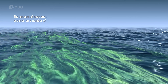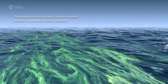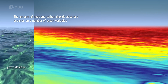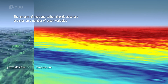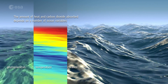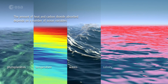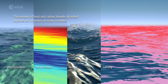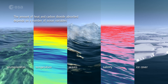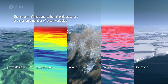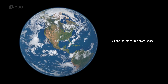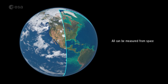The amount of heat and carbon dioxide absorbed depends on a number of ocean variables: phytoplankton, temperature, waves, salinity, and ice cover — all of which can be measured from space.